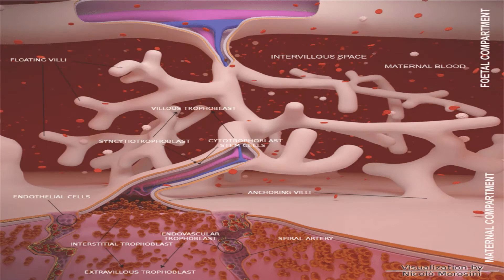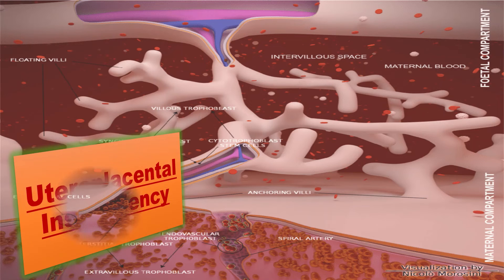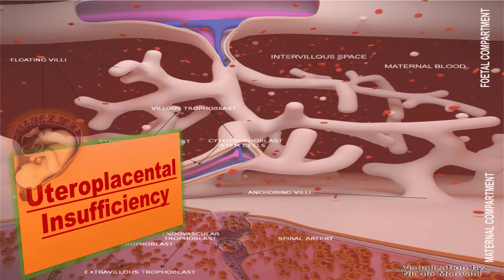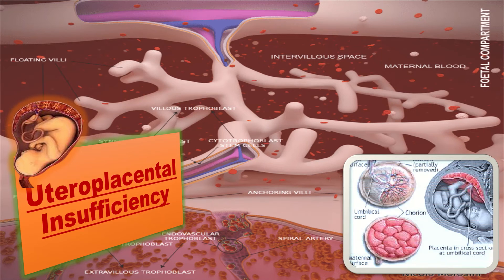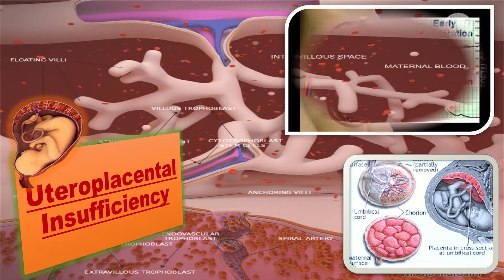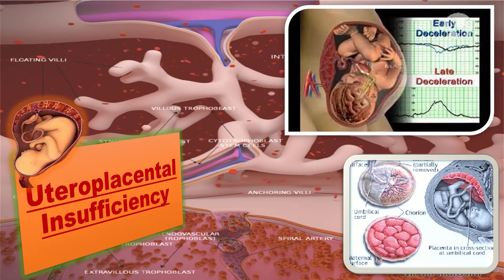What happens in uteroplacental insufficiency? Uteroplacental insufficiency results in decreased liquor volume because it causes blood flow to redistribute to the fetal brain rather than the abdomen and kidneys, causing poor urine output resulting in oligohydramnios.